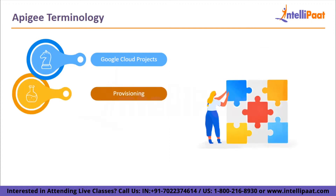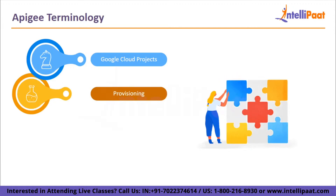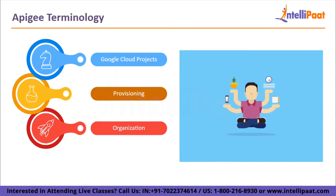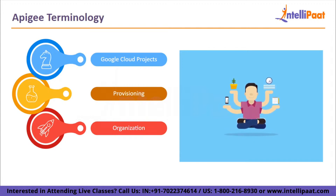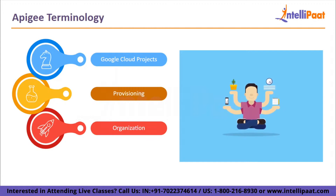Next is provisioning — installing and setting up Apigee are done through the provisioning procedure. Next is organization. In your Google Cloud project, an organization is a container for all things connected to Apigee, including API proxies, services and the resources required to support them. During provisioning, your organization is created.